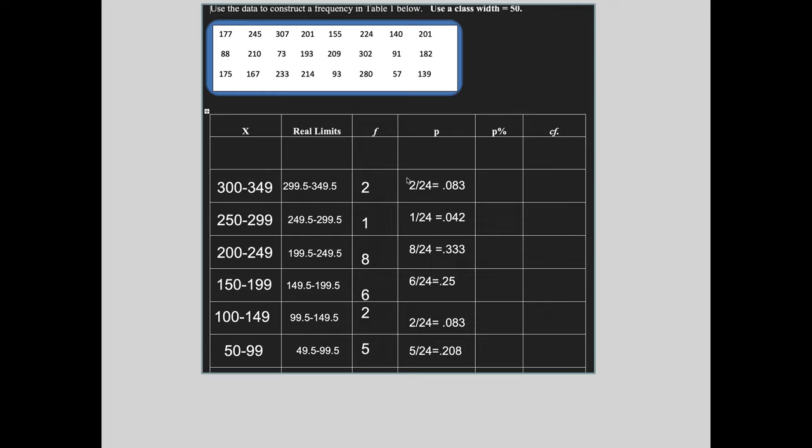And now for the proportion column, you just take how many are in the frequency out of the total. So two out of 24, one out of 24, eight out of 24, six out of 24, two out of 24, five out of 24. And then I convert them to decimals just by dividing on the calculator. Two divided by 24 equals one divided by 24 equals and so on.